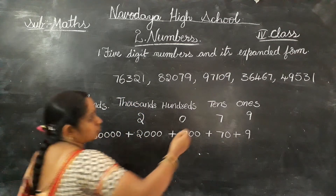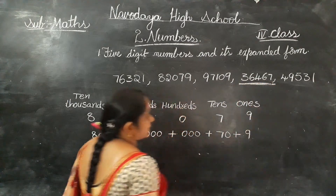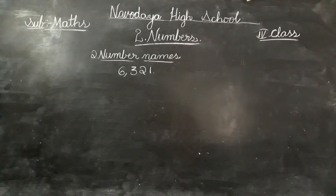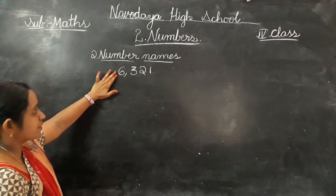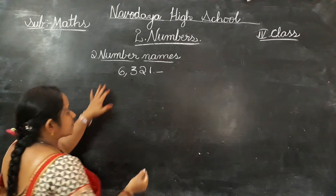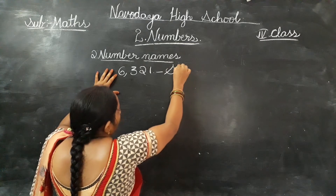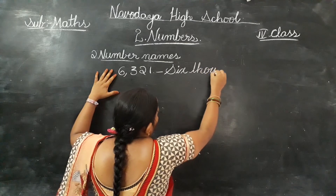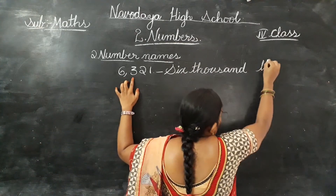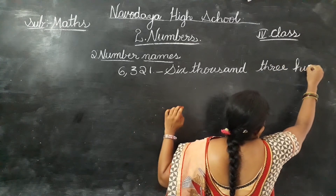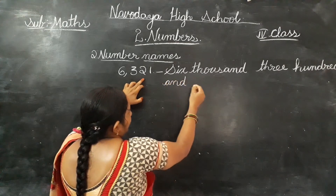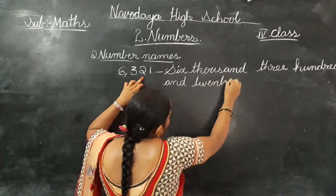Now you will try to write the expanded form for thirty-six thousand four hundred and sixty-seven. Next concept is number names. What is this number? This is a four digit number: six thousand three hundred and twenty-one. You know how to write the number name. Six thousand — thousand is spelt T-H-O-U-S-A-N-D. Three hundred and twenty-one — twenty is spelt T-W-E-N-T-Y. Twenty-one.